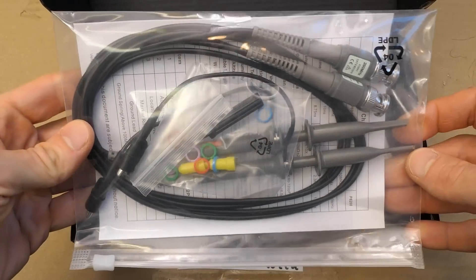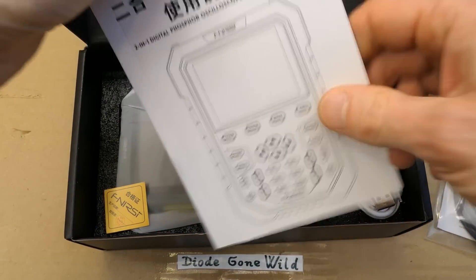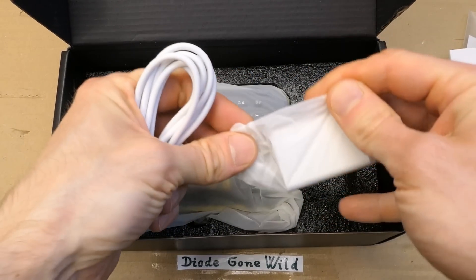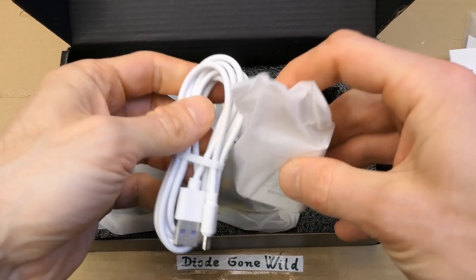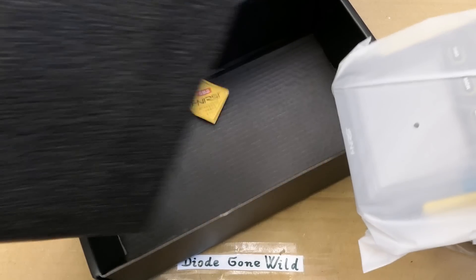And two probes, so it seems to be really two channels, the manual, which nobody reads, a USB charging cable, an adapter to charge it, and the oscilloscope, and that's it.